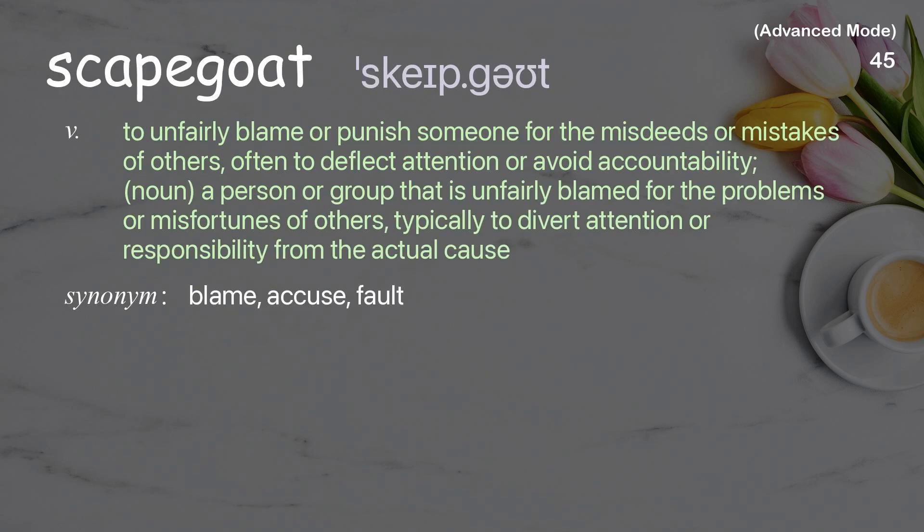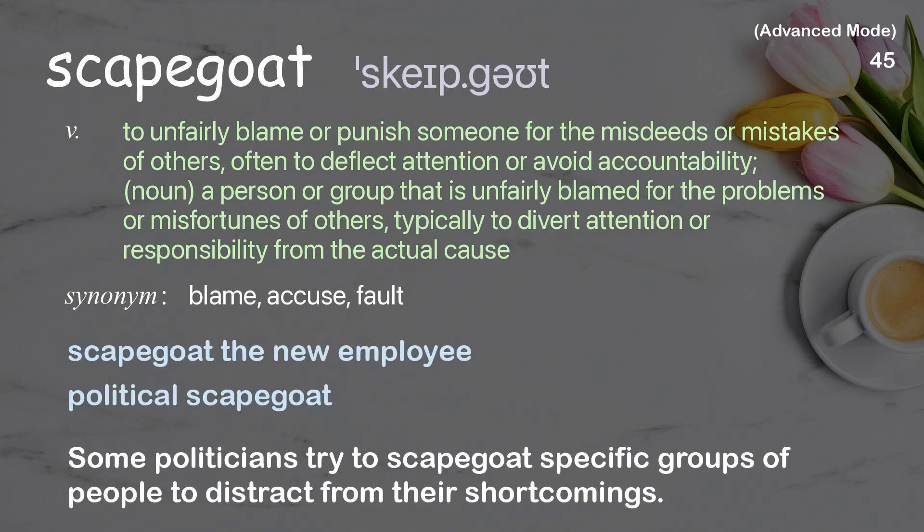Scapegoat: To unfairly blame or punish someone for the misdeeds or mistakes of others, often to deflect attention or avoid accountability. Noun: A person or group that is unfairly blamed for the problems or misfortunes of others, typically to divert attention or responsibility from the actual cause. Examples: Some politicians try to scapegoat specific groups of people to distract from their shortcomings.